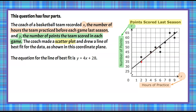Each point on the scatterplot represents a relationship — for example, two hours of practice and 35 points scored. The coach collected all this data for every game week. He then drew a line of best fit to represent the data, with about as many points above the line as below, trending with the data. The equation of this line of best fit is Y equals 4X plus 28.